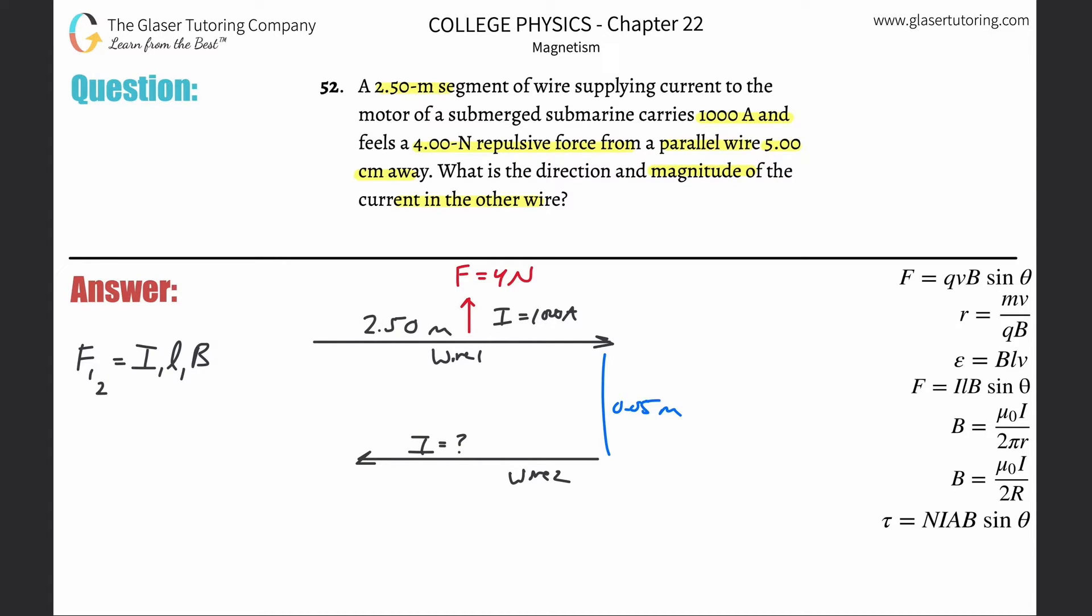Now they didn't tell us anything about angle, or did they? Parallel. But if you take a look at number 50 again, you'll know that they're 90 degrees. So 90 degrees, sine of 90 is just 1. So that just cancels. So now we have F₁₂ is equal to I₁L₁B₂.